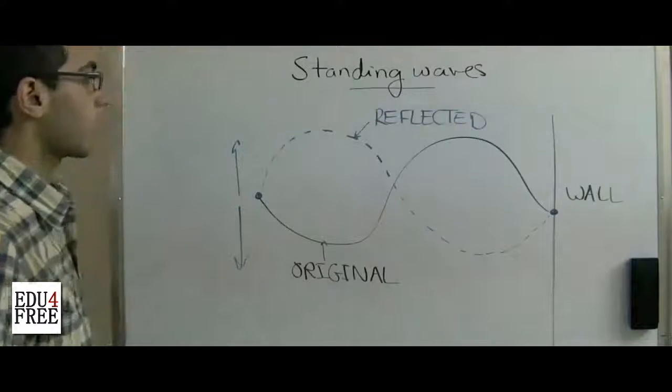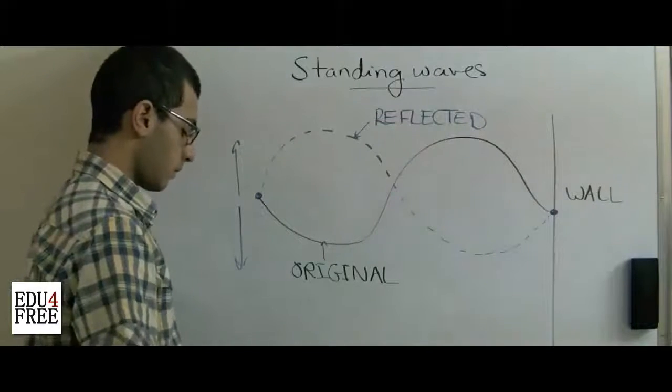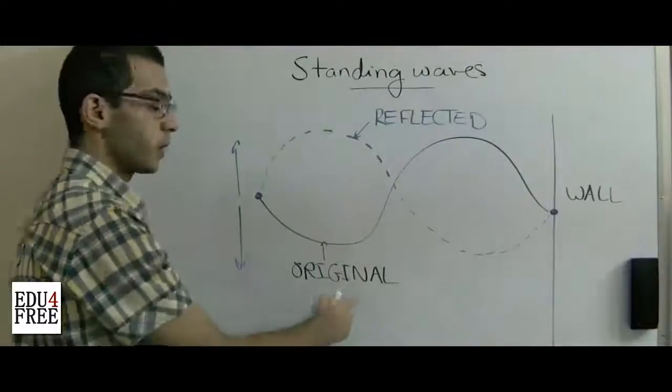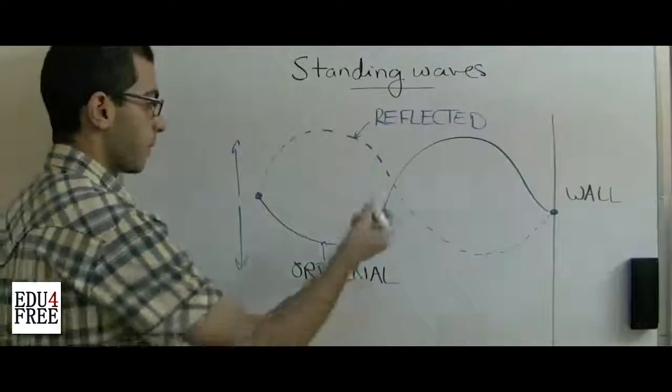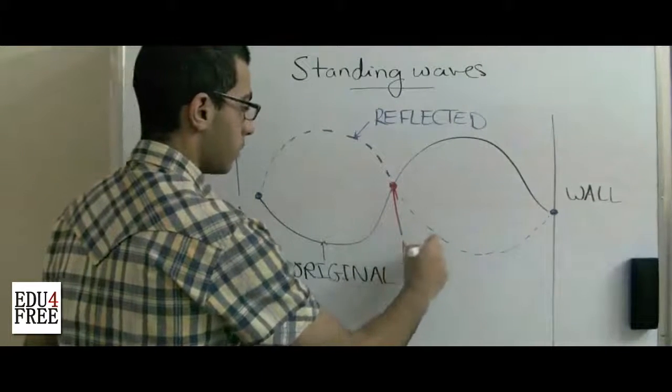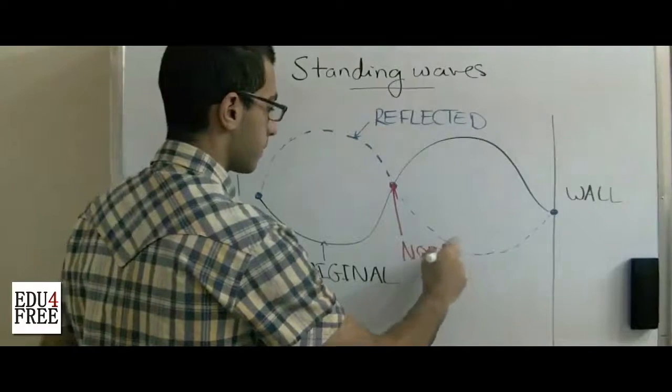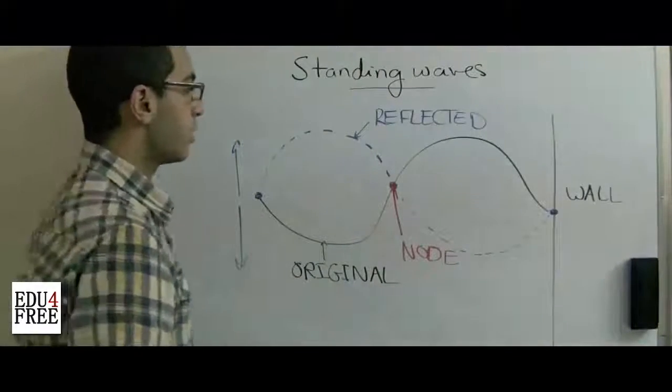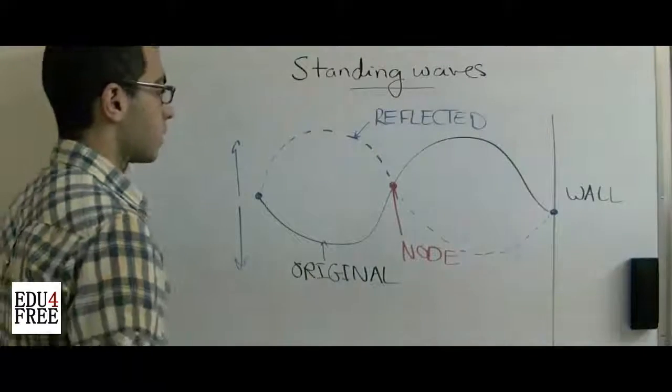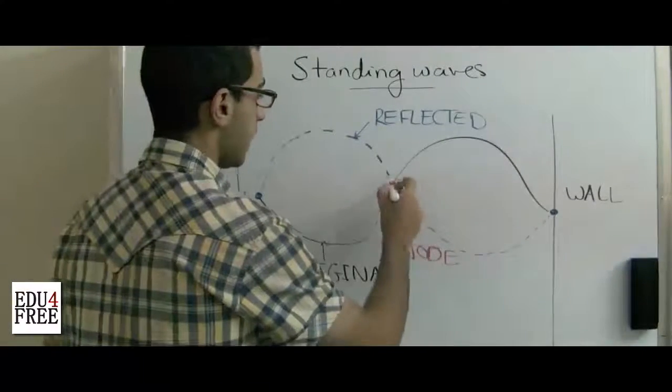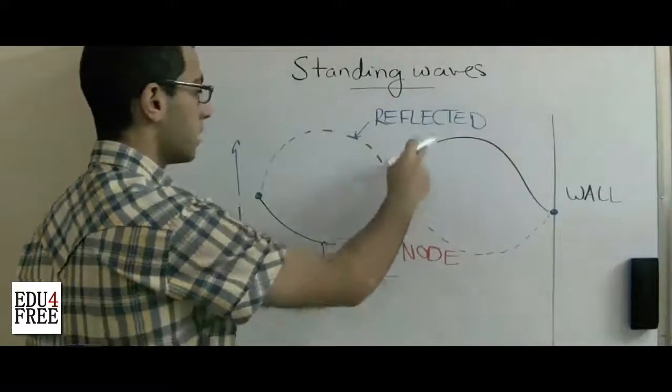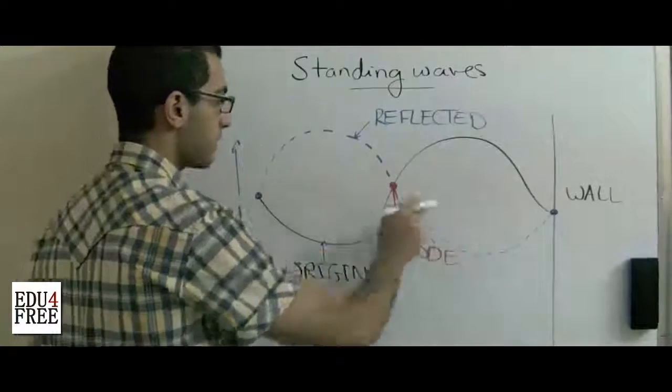Okay, there are some points where the reflected wave and the original wave meet together, like that one. This is called a node. And this node is a point of destructive interference, because we can notice that there isn't any up or down part in this point. There is a point where the two waves meet.